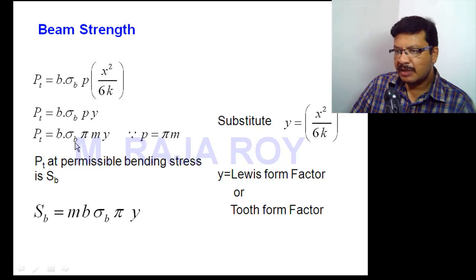Now Pt is the tangential force at sigma b. If sigma b is permissible bending stress, that means at permissible bending stress, the amount of tangential force that the gear teeth can transmit, that we can call as Sb. Beam strength is nothing but it is also a tangential force, but that is the maximum amount of tangential force that the gear teeth can transmit at the permissible bending stress. So after replacing Pt by Sb, then beam strength is m into b into sigma b into π into y.